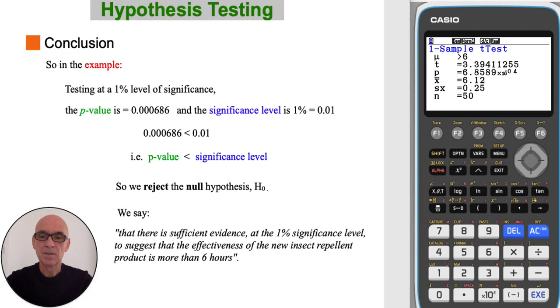So in the example, testing at a 1% level of significance, we can see that the p-value is less than the significance level. So we reject the null hypothesis, H0. And our conclusion is that there is sufficient evidence at the 1% significance level to suggest that the effectiveness of the new insect repellent product is more than 6 hours.